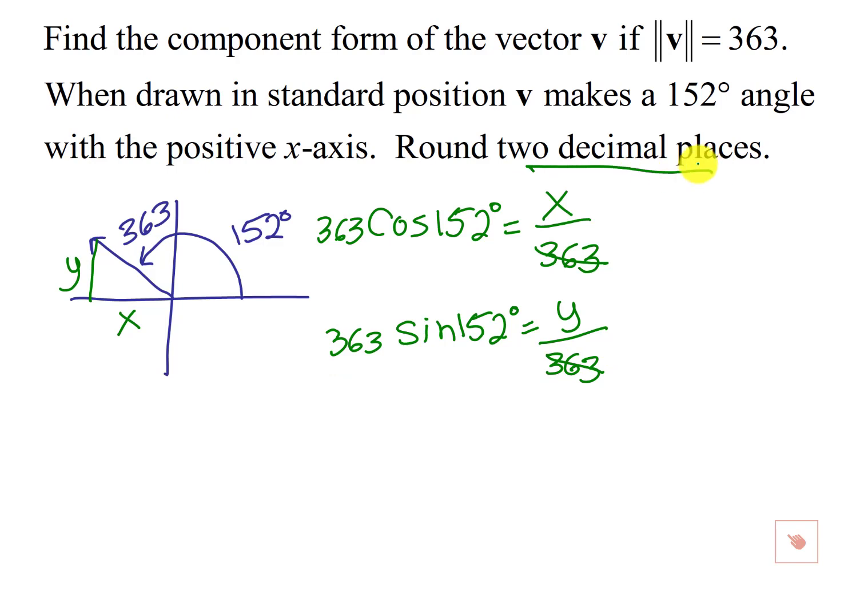It does want us to round to two decimal places, so we're going to put this in a calculator. We're going to make sure we're in degrees, and I'm going to do 363 cosine of 152, and that's going to be negative 320.51 to two decimal places.